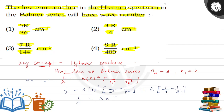This gives one upon lambda equals R multiplied by five upon 36. The wave number, nu bar, which is one upon lambda, equals five R upon 36 cm inverse. This is the wave number of the first emission line in hydrogen spectrum in the Balmer series. So our answer is option one. Hope you understood it well — best of luck!